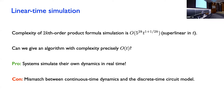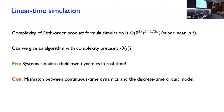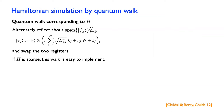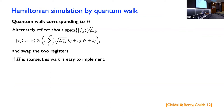It turns out you can give algorithms in the circuit model that do simulation with a number of gates that's really just linear in T. I'm going to explain the first method developed to show that. The first method was based on ideas of discrete-time quantum walks. I want to mention the main ideas behind this Hamiltonian simulation algorithm. What we can do is define a discrete unitary operation that does something related to the Hamiltonian, and will allow us to give this linear-time simulation. This unitary operation is what you might call a quantum walk — a discrete-time quantum walk corresponding to the Hamiltonian.